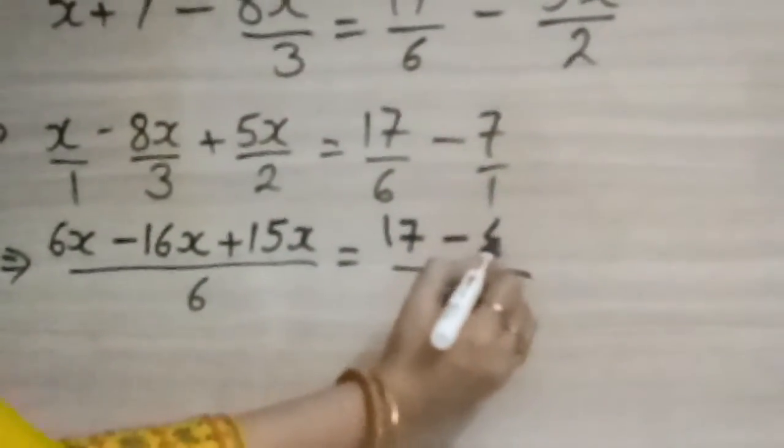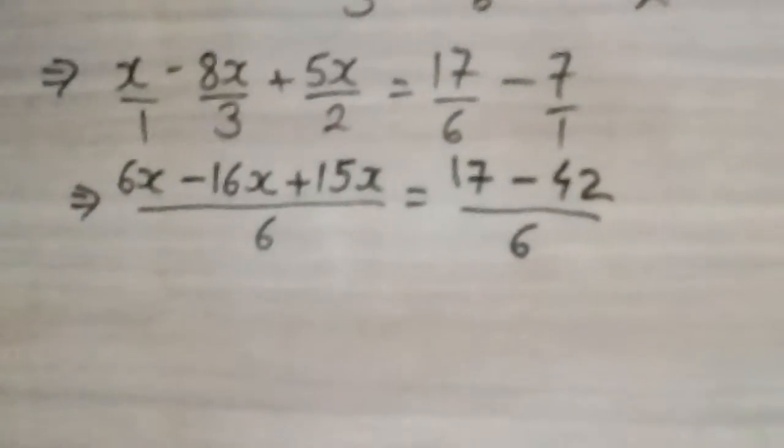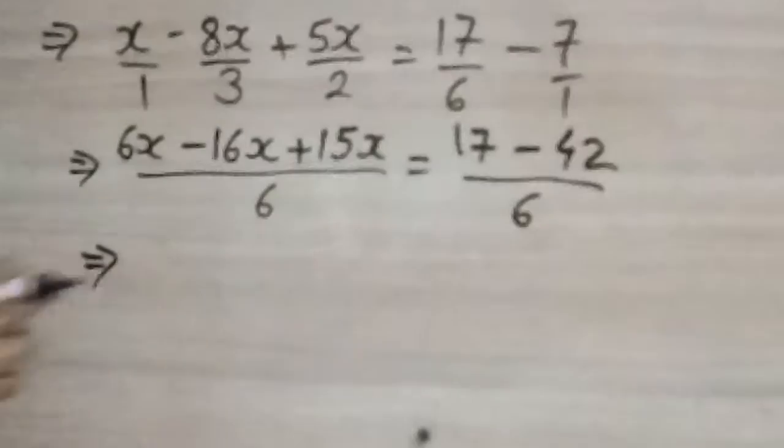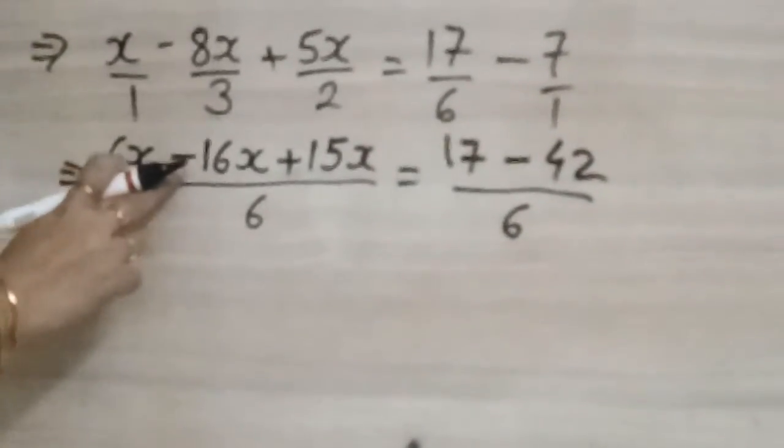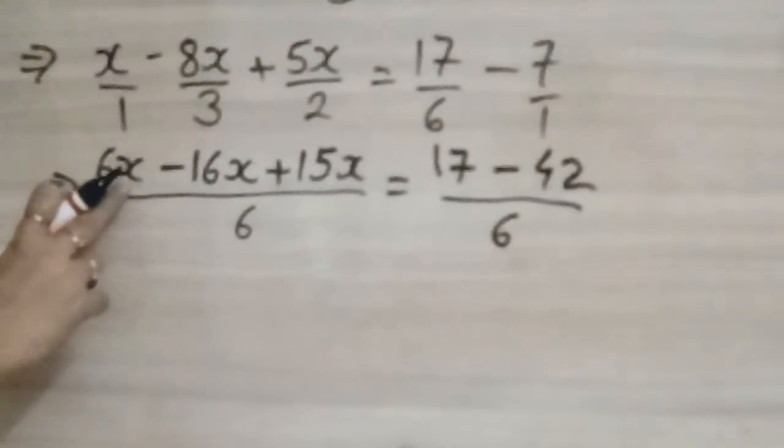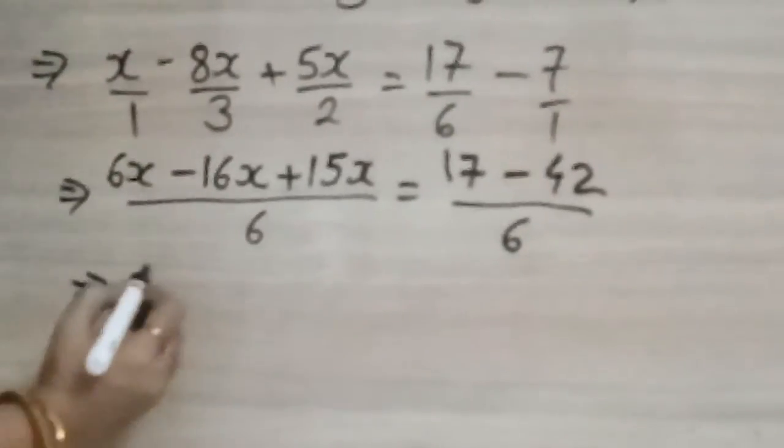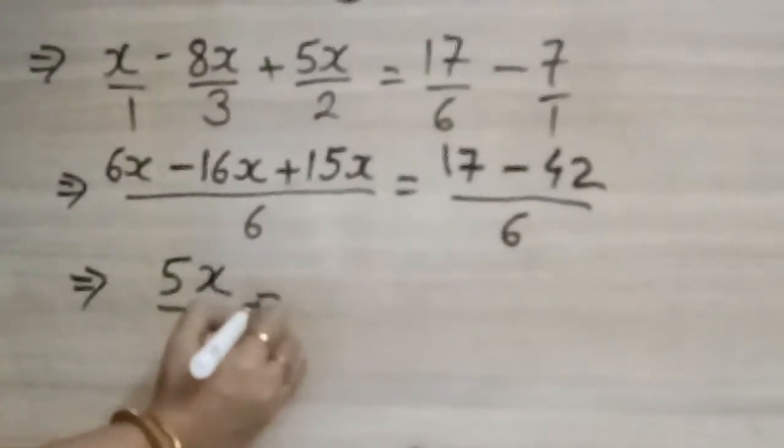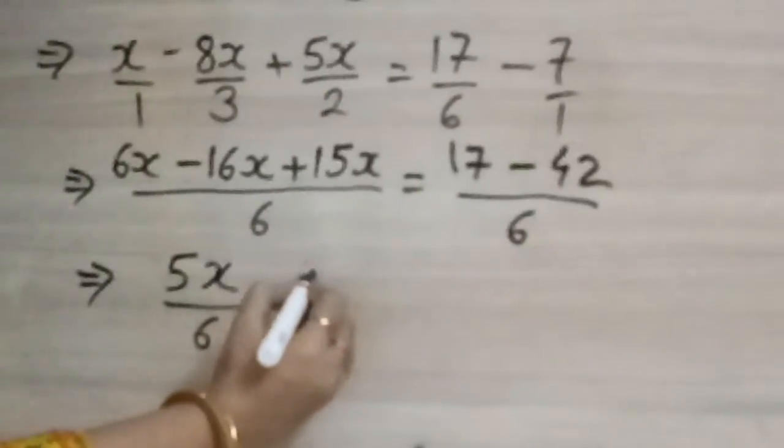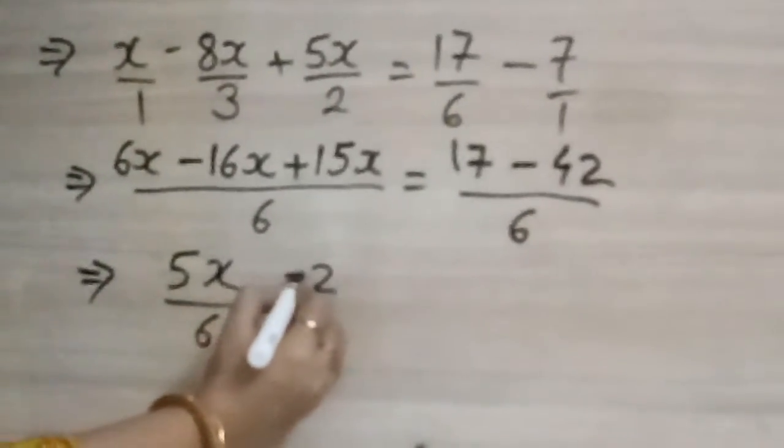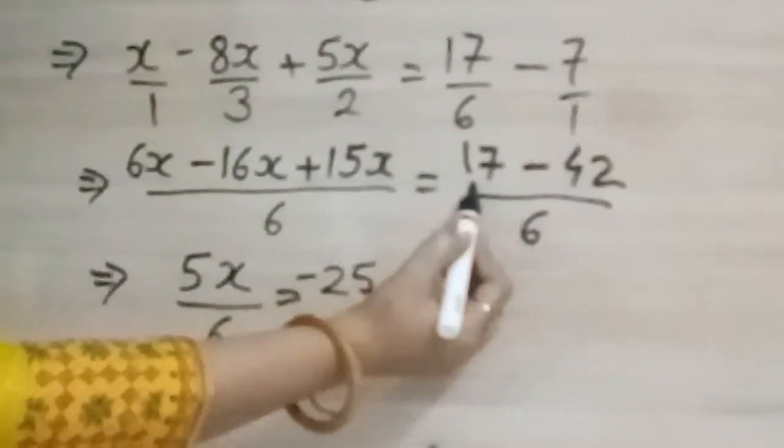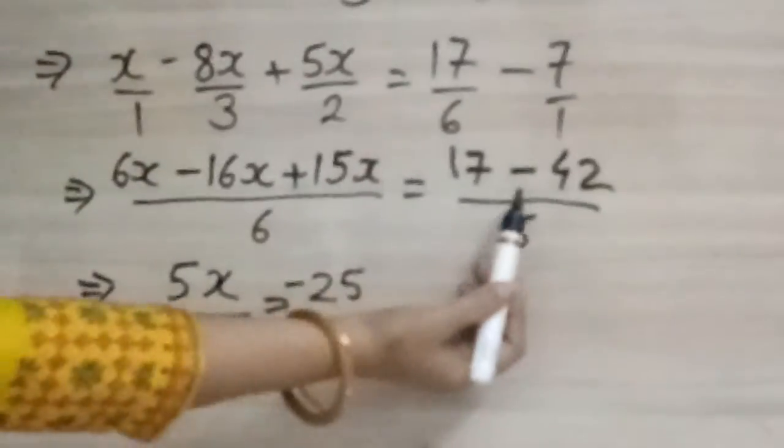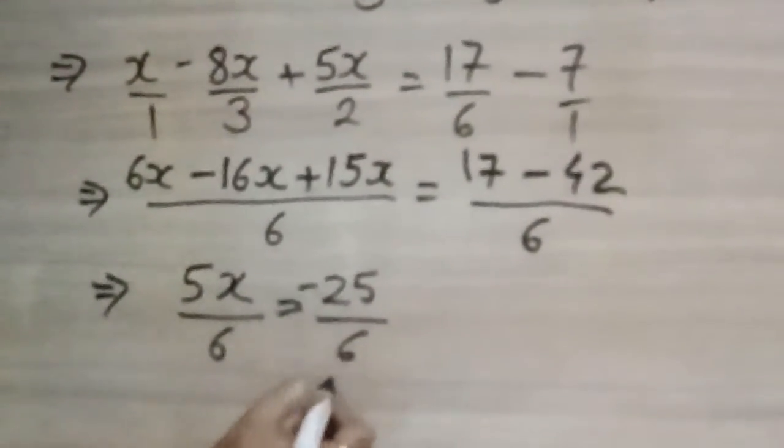6 into 7 will come 42. So it will come 5x upon 6 is equals to here we will subtract so it will come minus 25. 42 minus 17 will be 25, 42 minus 17 will be 25 and sign of greater number, so it will come in minus upon 6.